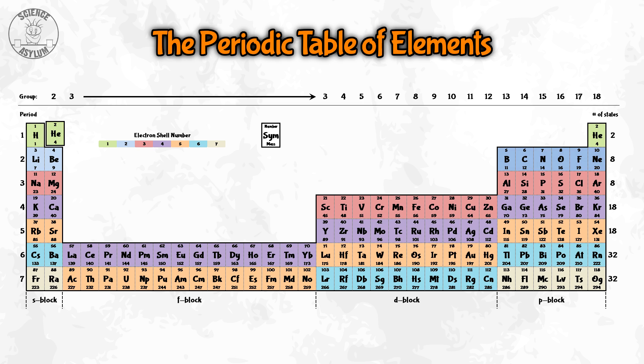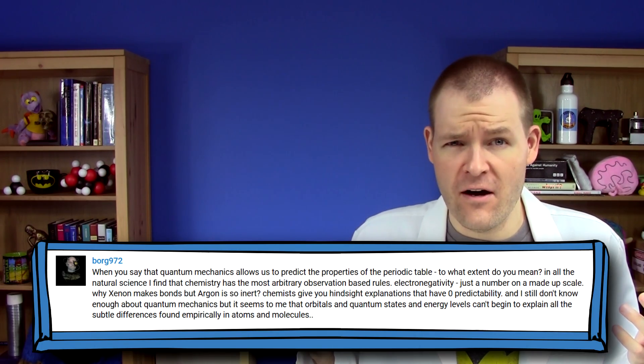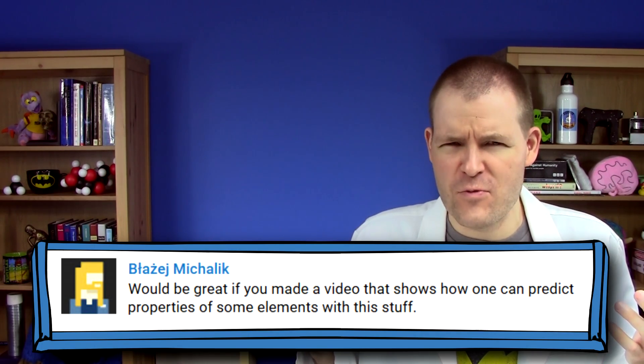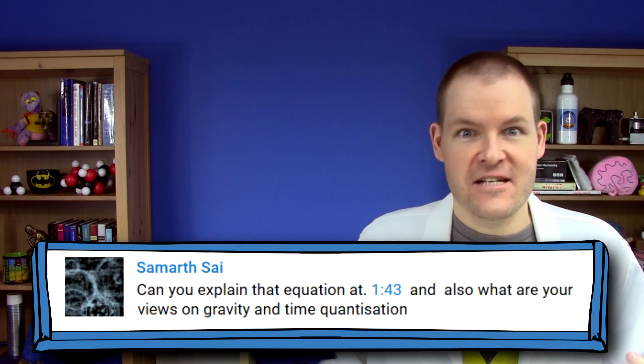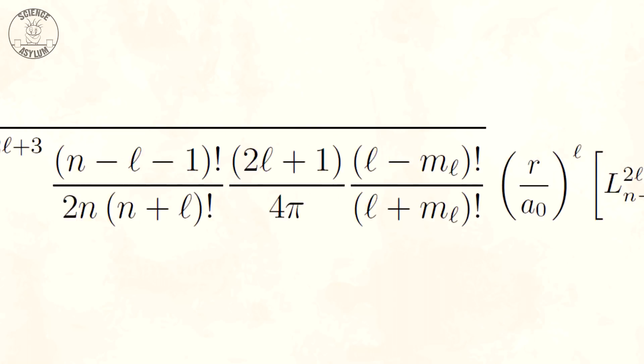In the previous video, I mentioned the periodic table a few times and said that quantum mechanics perfectly predicts it. This left Borg 972, Boisje McCulloch, and some others wondering: how does it do that? That is the hydrogen atom's wave function. And before we can understand the periodic table, we need to have some idea of what wave functions say. You can handle this, I promise.